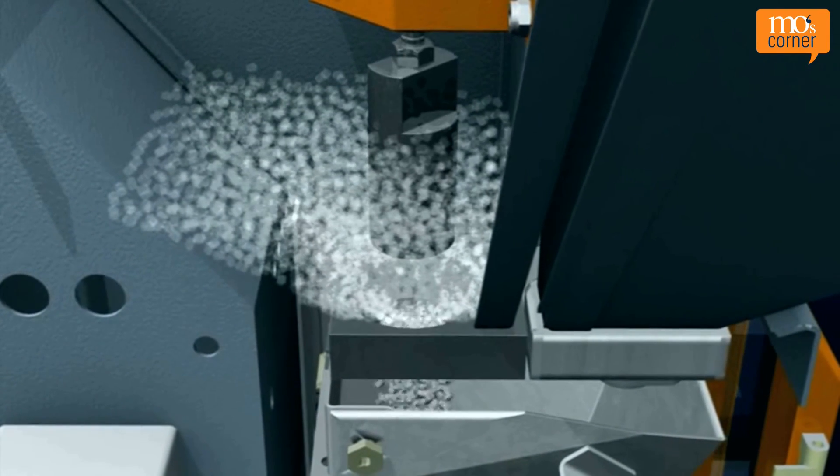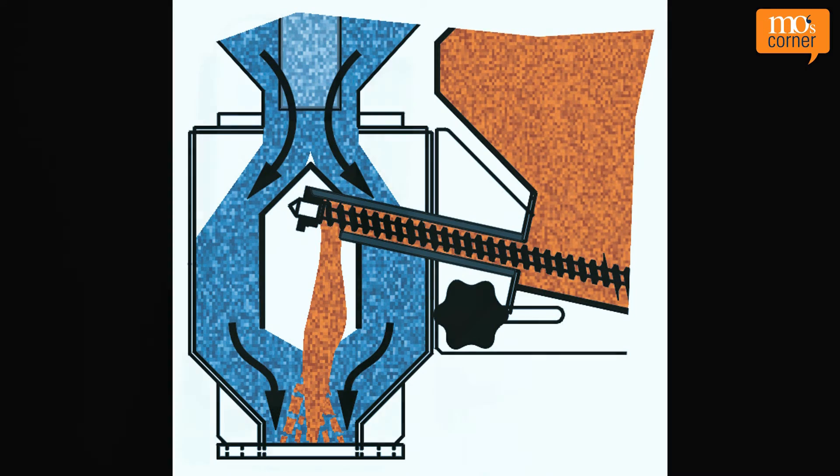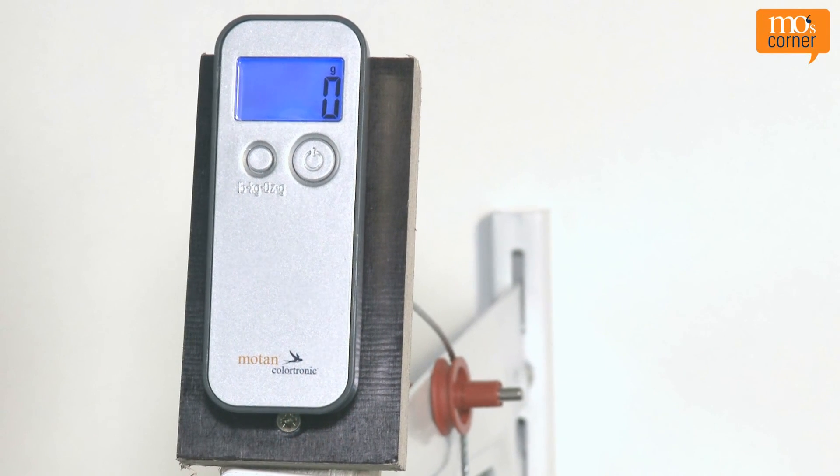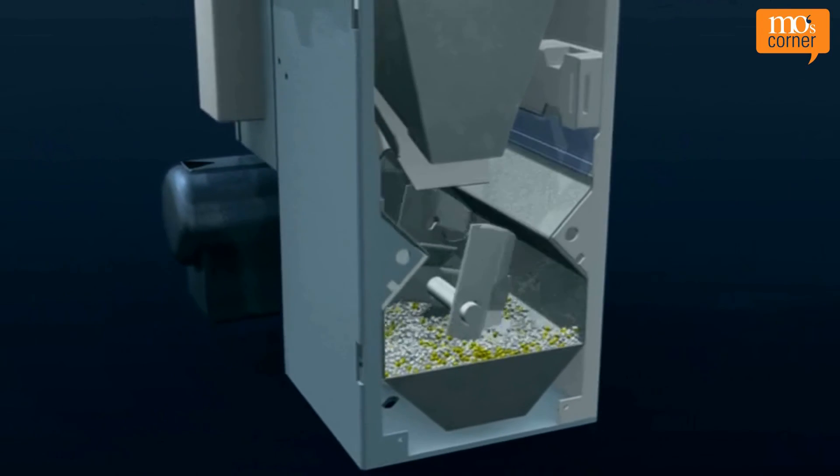Dosing units should be chosen according to the material properties. One differentiates between volumetric and gravimetric dosing. The subsequent mixing ensures the best possible result.